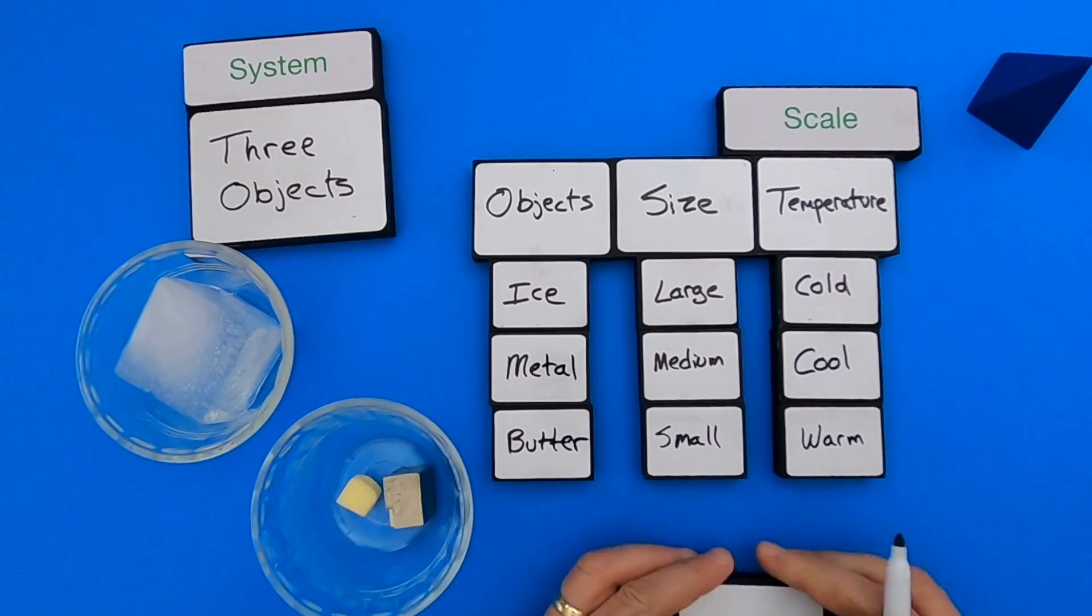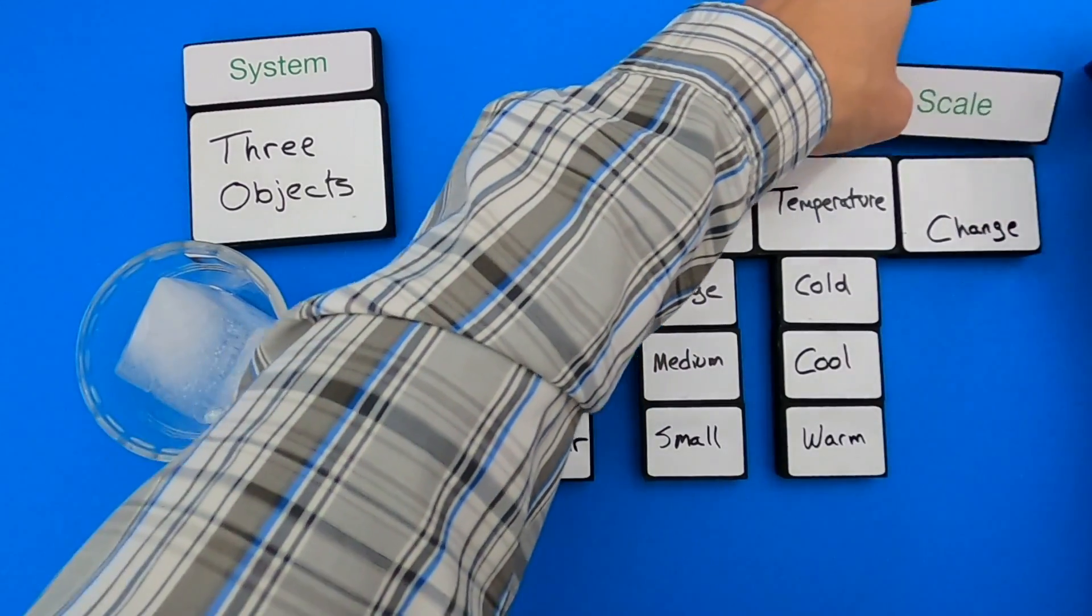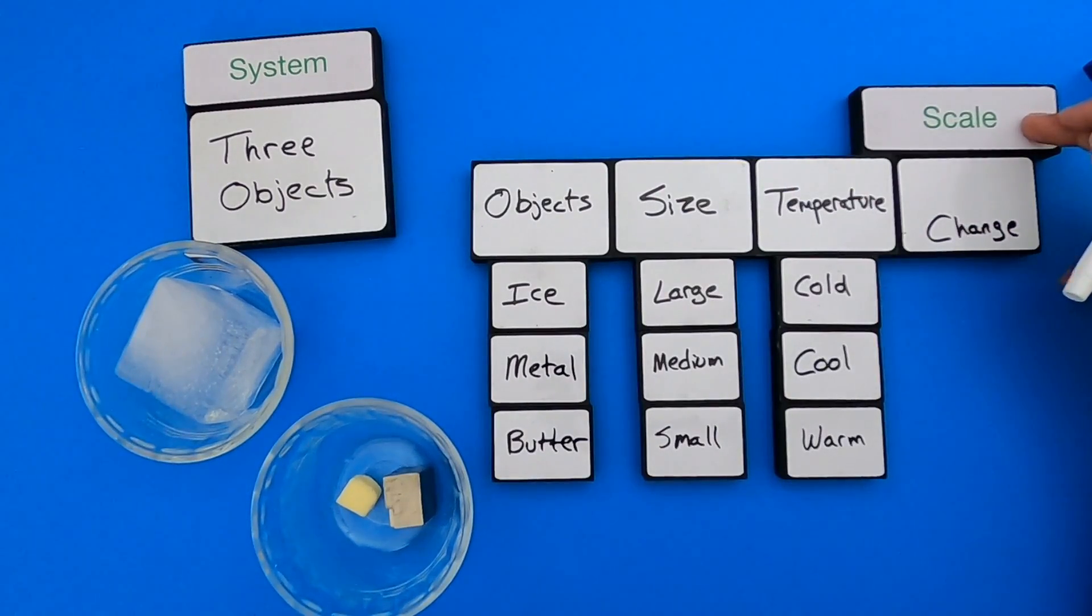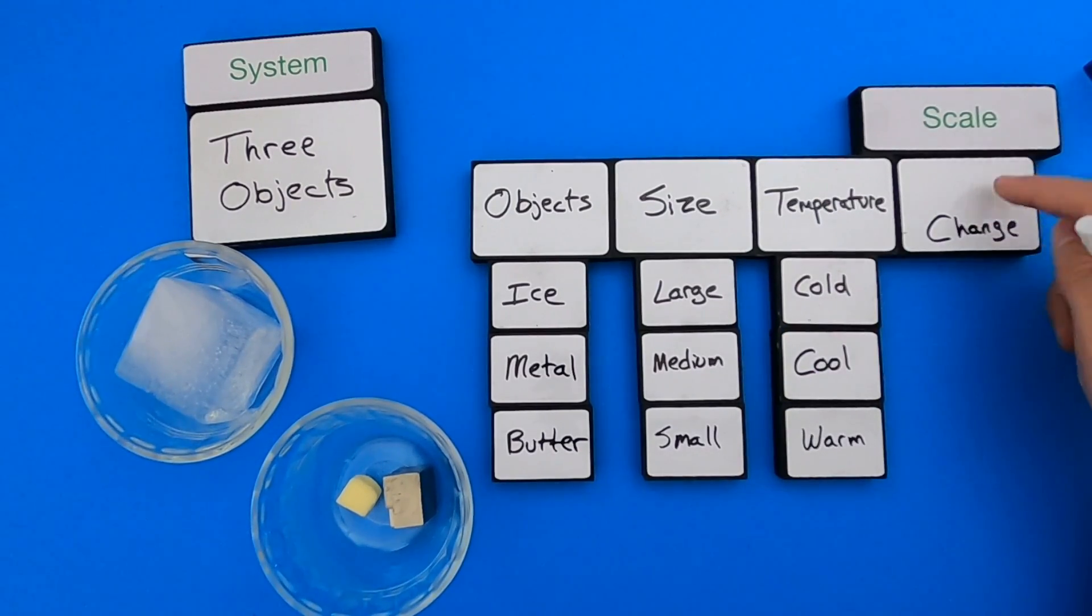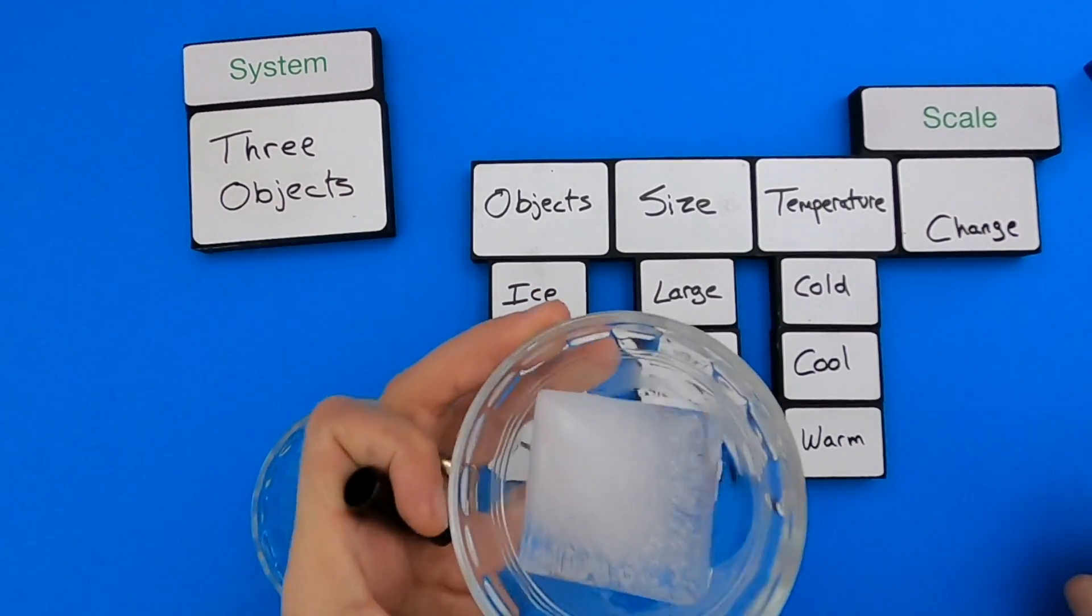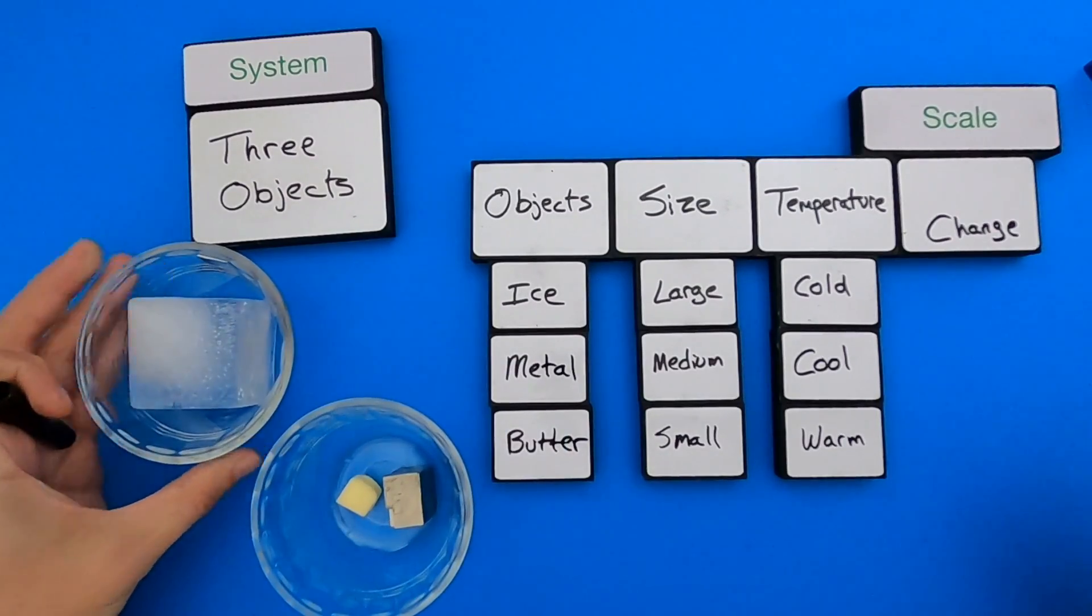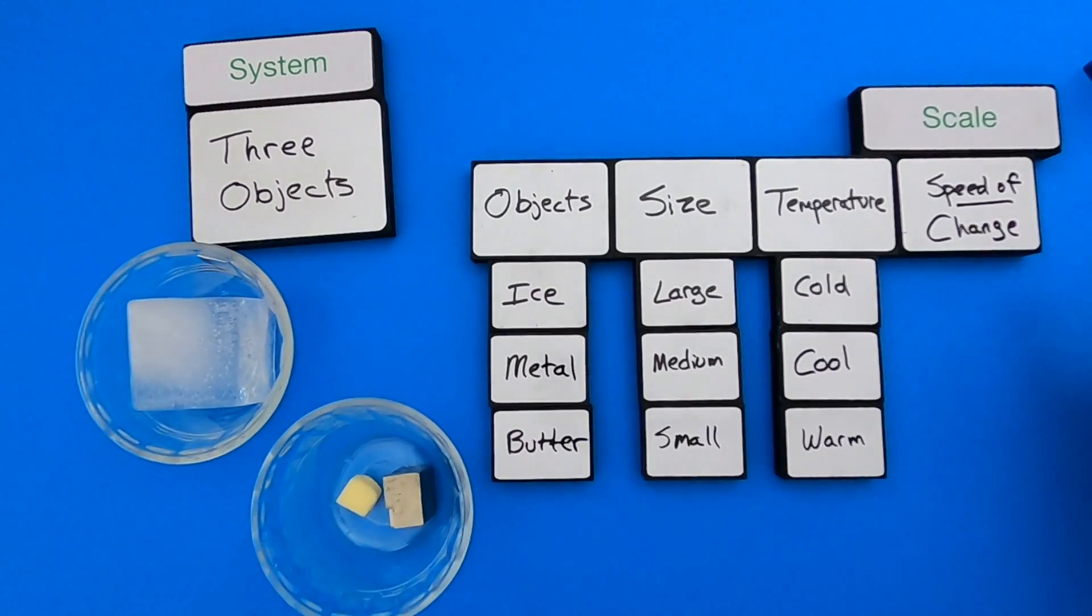Now when you're looking at scale, a quick thing you can do is just read from what we're studying to the word scale and see if it makes sense. So size scale makes sense, temperature scale makes sense, but change scale doesn't really make sense. And so when I'm watching something change, I really have to watch it change over time. And so a better way to think about this scale would be the speed of change. So how fast is it changing over time? And so let me write some relative speed of change scales.